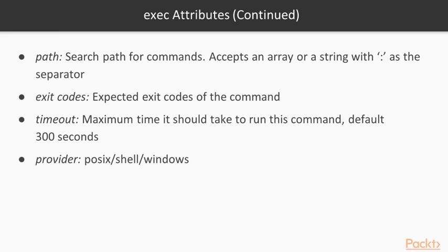Exit codes are the expected exit codes for the command. By default, the exec command is considered to be successful if the command returns zero. Then there is timeout — this is the maximum time it should take to run this command. The default is 300 seconds, or 5 minutes.